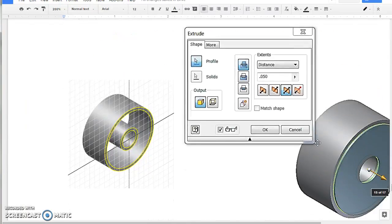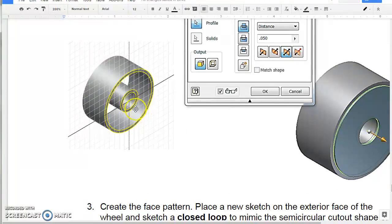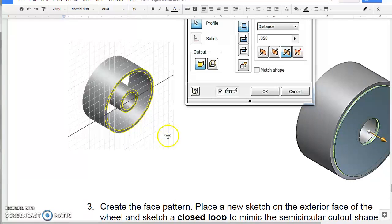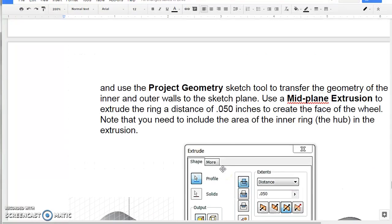Look at our next dimensions that we have to put in. So we're going to go in and use Project Geometry and create the face. Let's talk about what we're doing here. If we look at this, it says use a mid-plane extrusion to extrude the ring a distance of 50,000.